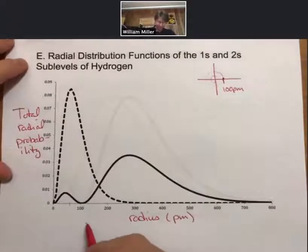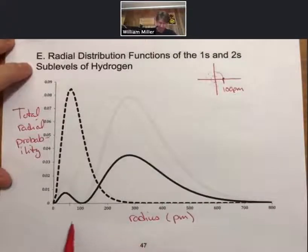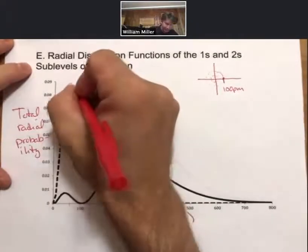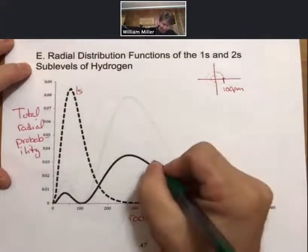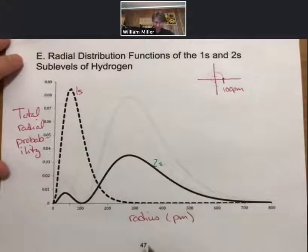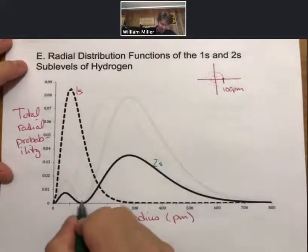So then what I said before is first off, this is 1s and this is going to be 2s, and we see that 2s has a node.